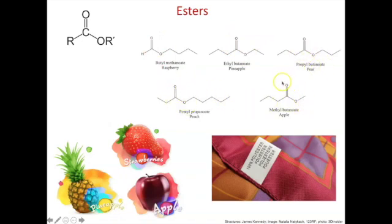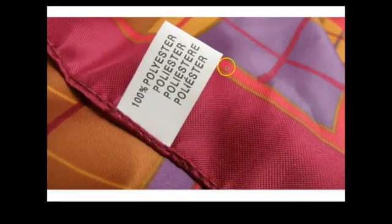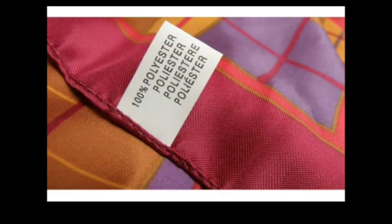All of these esters have the name ending -OATE. For example, methylbutanoate is responsible for the smell of apples, and pentylpropanoate is responsible for the smell of peach — both esters confirmed by the -ATE ending. The remainder of each structure is hydrocarbons — the zigzag part of the line angle drawing is just carbons and hydrogens. Another real-world example is polyester: a fabric labeled 100% polyester must contain the ester functional group as part of its molecules, confirmed by the name ending '-ester.'